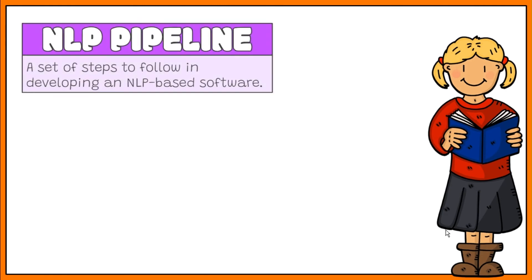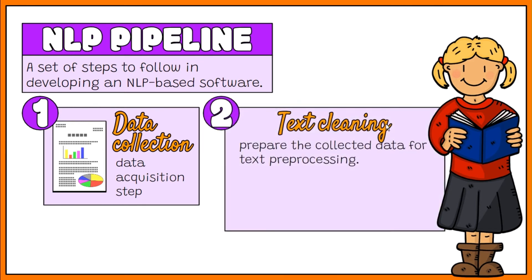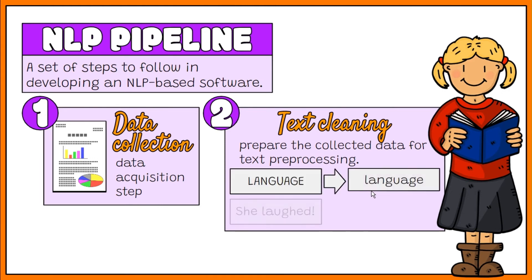If an NLP-based software is to be developed, a set of steps is usually followed for a more organized process. This is called the NLP pipeline. The basic steps are: Data Collection, which is the data acquisition step; and Text Cleaning, which is done to prepare the collected data for text preprocessing. Example tasks included here are changing the text to lowercase and removing punctuation marks.